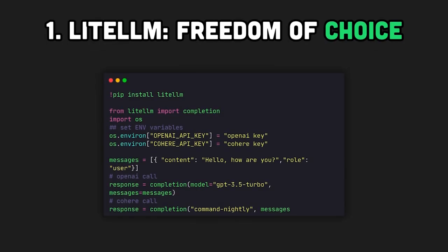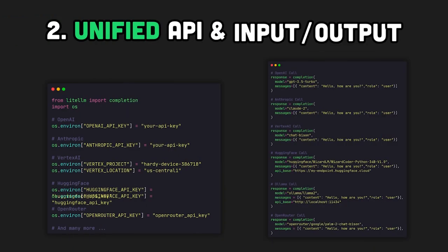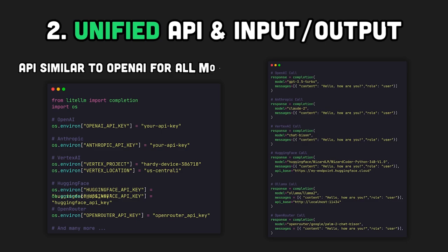LiteLLM is super simple. You install one library, set up environment variables with credentials, and you can swap any LLM provider just by changing a string in the name of the model. It has a unified API — the same input-output for all models. The creators implemented the most popular one from OpenAI and wrapped all LLMs to work with the same API.